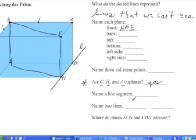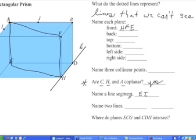Now name a line segment. Between any two points there's a line segment, so pick any two. I'll choose E and I. If I just write EI without a symbol, that's not a line segment — two capital letters together define a distance, specifically the distance from E to I. To name the line segment itself, be sure to put the segment symbol over the top.